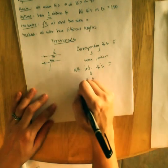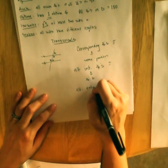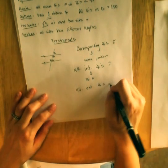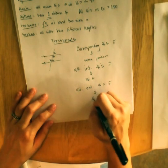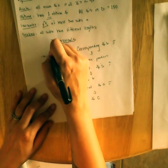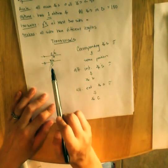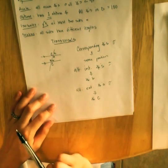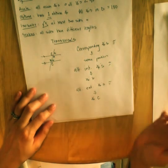We also have alternate exterior angles and they are congruent. Again, the alternate meaning they are on opposite sides of the transversal and exterior means they are on the outside of the parallel lines.